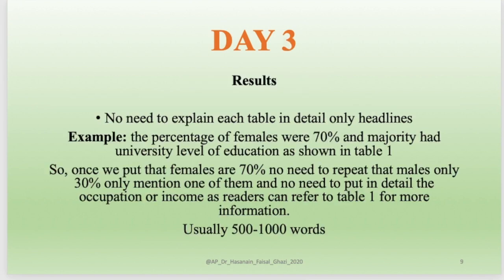On day three, you describe the results. The most important point is that there is no need to explain each table in detail — only the headlines. For example, if the percentage of females were 70%, once you state that, there is no need to also say 30% were male, because it is already very clear. The results section is usually 500 to 1000 words.